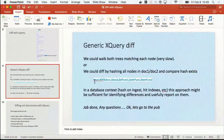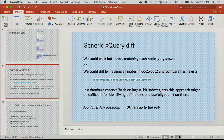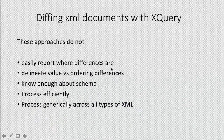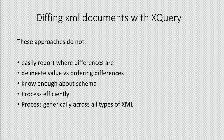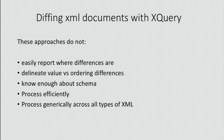Diffing XML documents — they don't easily report where the differences are. They don't delineate between value and ordering. It'd be nice if you could know when there's a difference purely because of things being out of order. They're also not, as Michael Kay was saying, schema aware. It'd be nice for a differencing utility to be aware of an XSD schema, to be aware of enumerations and whatnot, and process efficiently.